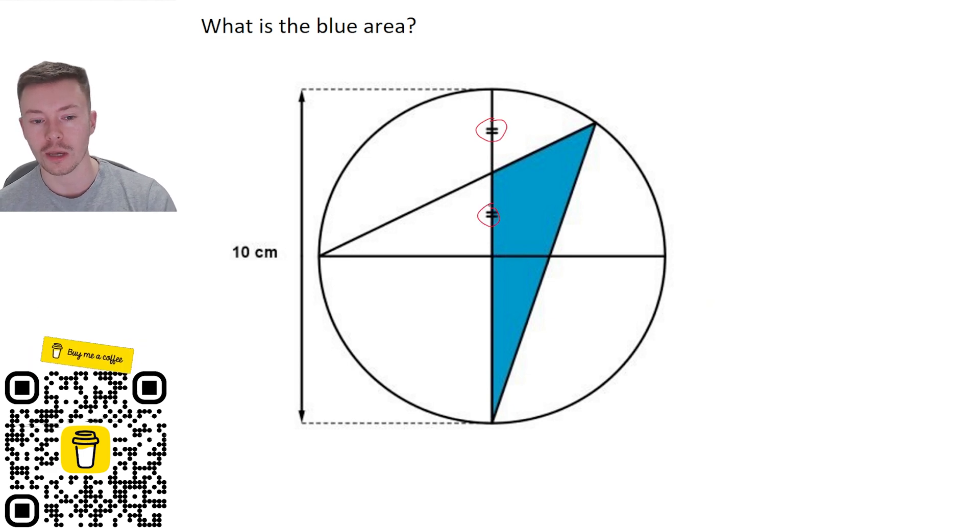We've also got the fact that these two line segments are the same length. That's going to split the radius that would have been 5 up into 2.5 each of those lengths. Now if you want to have a go at this yourself, pause the video. If you want to see how I do it, keep watching.